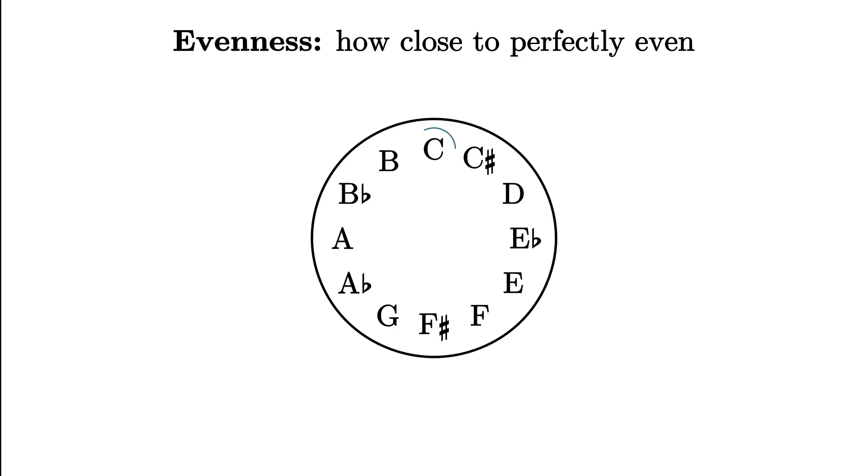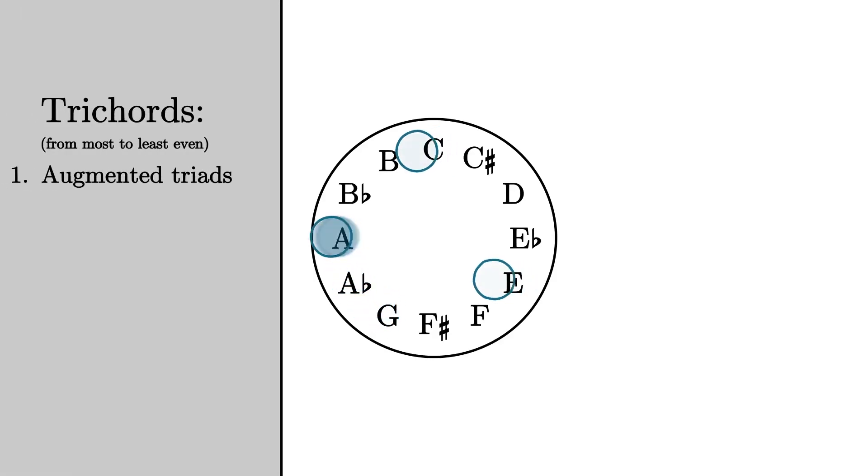For example, think about a C major triad, C-E-G. To turn it into an augmented triad, I can raise G up to A-flat. That's just a one-semitone change, which isn't very big, so it turns out that major and minor chords are the second most even three-note sets just behind augmented triads.